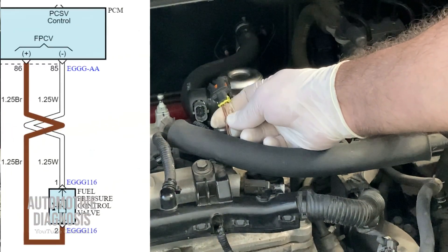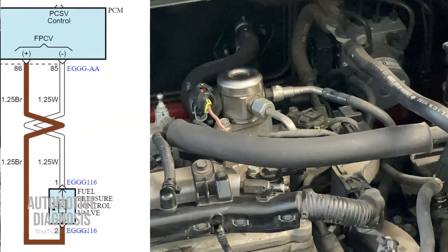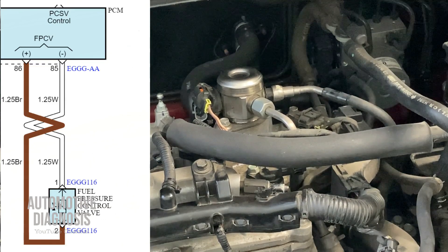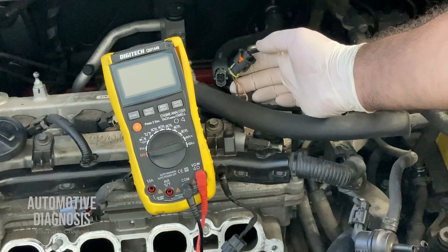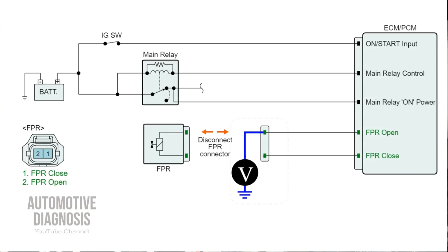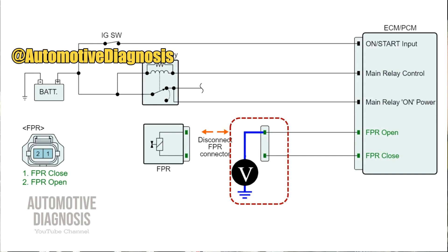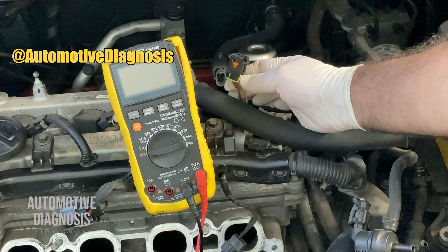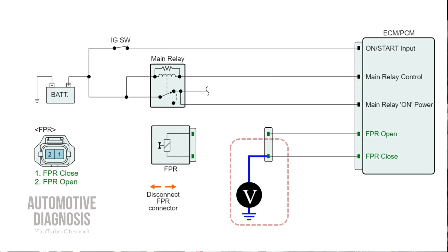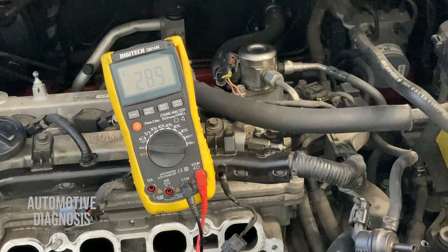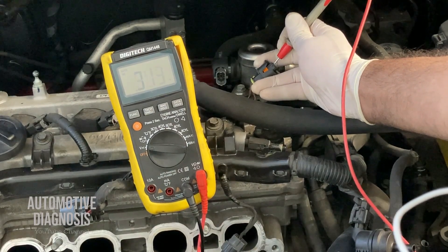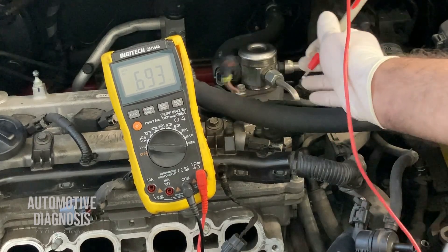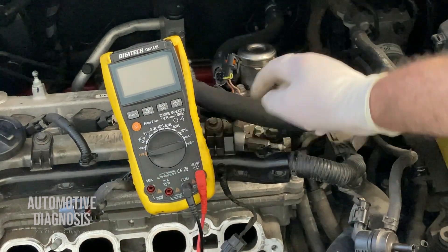As you see on the wire diagram on screen, there are two wires in the connector connected to the engine control module — one for opening the control valve and the other for closing it. To check if these two wires are okay, you can check the voltage on the wiring. For the opening terminal the voltage should be between 0 to 0.6 volts, and for the closing terminal it should be 0.6 volts with the ignition switch on. As you see, I have 0.69 volts which is exactly within the range.